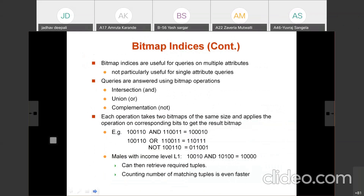Bitmap indices are useful for queries on multiple attributes, not particularly for a single attribute. Queries are answered using the operations of intersection (AND), union (OR), and complementation (NOT). We use simple logical operators AND, OR, and NOT as per requirement. That is about bitmap indices.